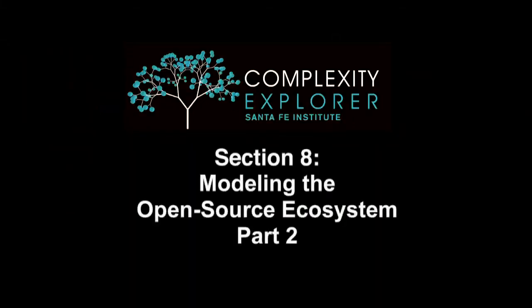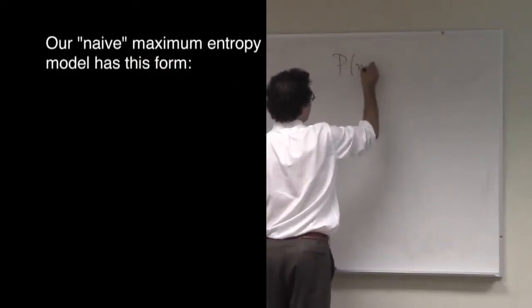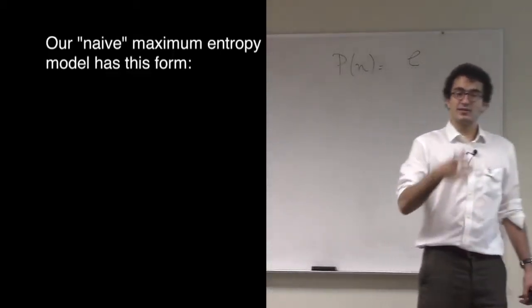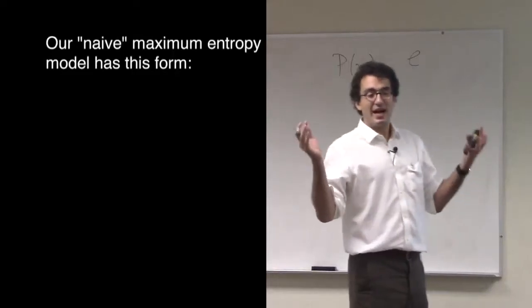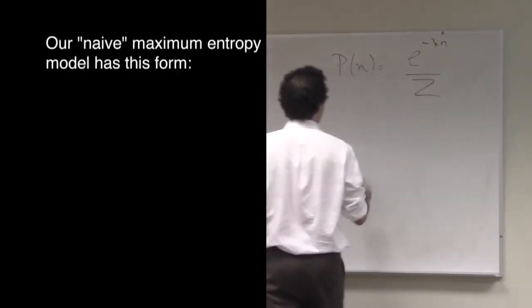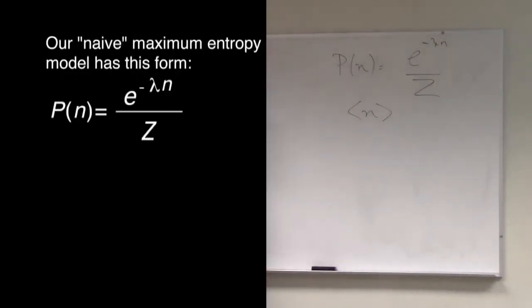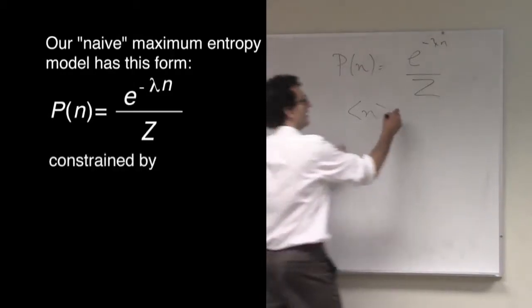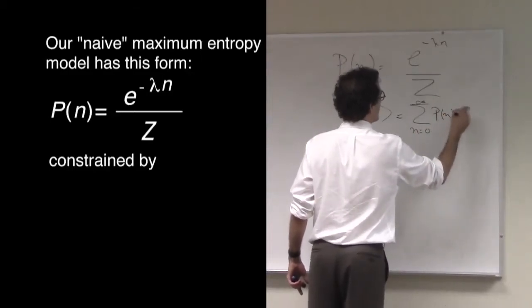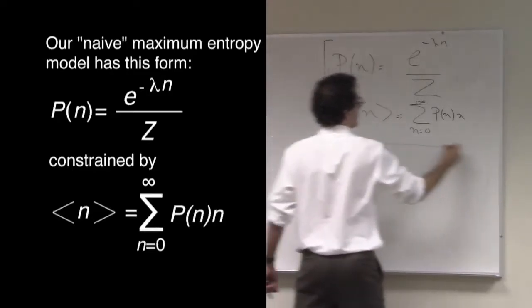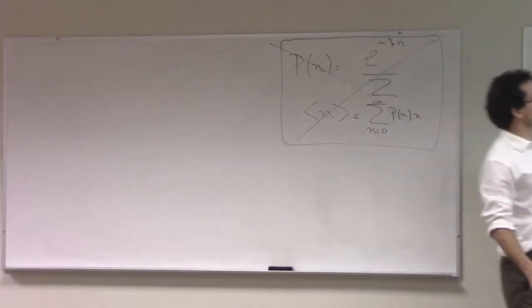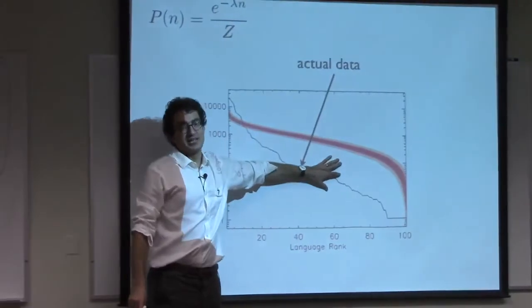In the previous unit, we showed that a naive maximum entropy model for the distribution of language abundances, describing how popular a language is based on how many times it's used in the open source archive. This model constrains only the average number of times a language is used. This maximum entropy model is completely unsuccessful in reproducing the data we see. It under-predicts the popular languages and over-predicts the less popular languages.